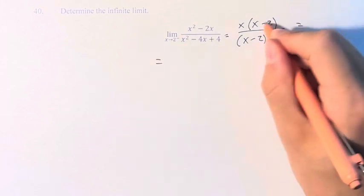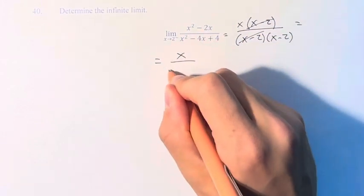And therefore we can say that this is equal to, cancelling these out, x over x minus 2.